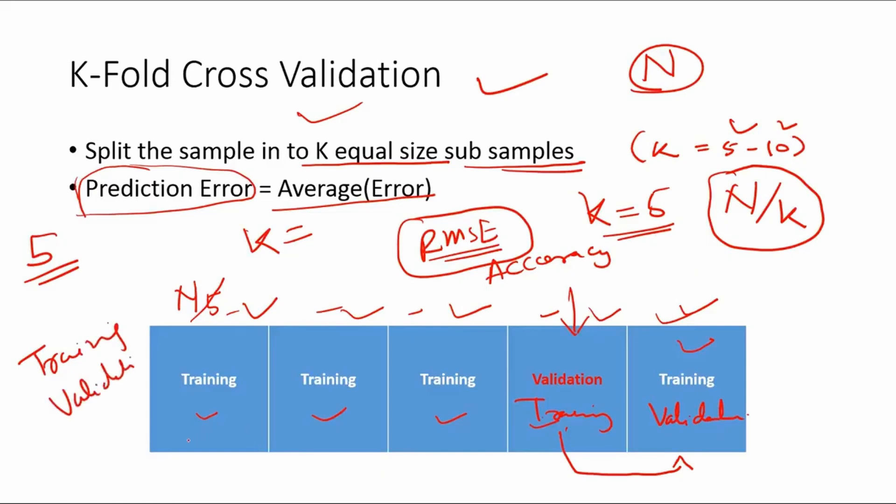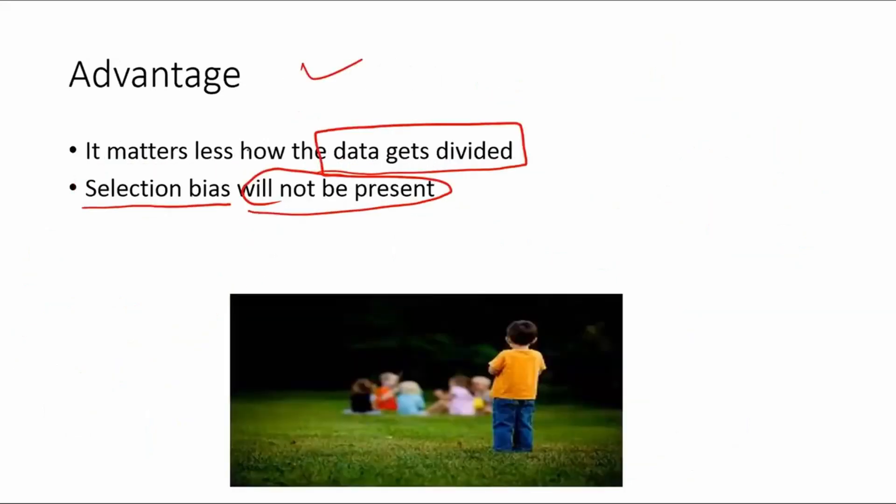Because validation set can be this one, can be this particular one, can be this split as well, can be this split and this split. Similarly, a training set can also be all the splits. So every data point present in the sample will be a part of training data and will also be part of the validation data. Hence, this particular way of cross validating is free from sample bias or selection bias.